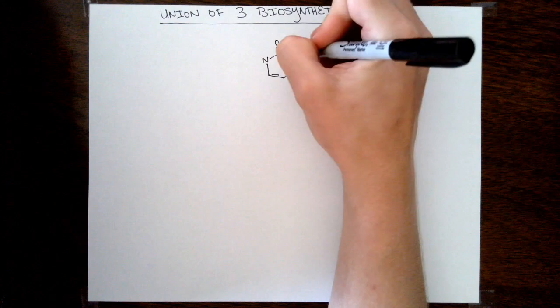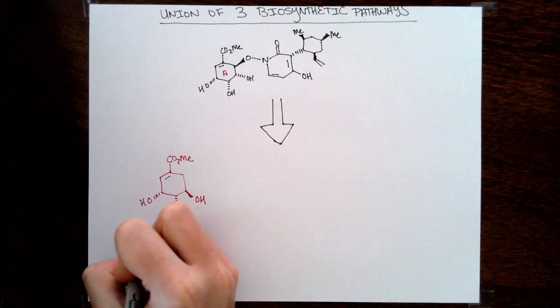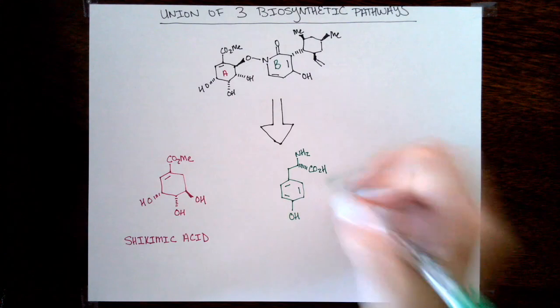Maximiscin is a fungal metabolite. When researching its biosynthetic pathway, they found that it came out of a combination of three pathways: a polyketide synthase, a non-ribosomal peptide synthase, and the shikimate pathway.